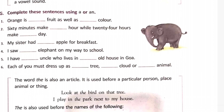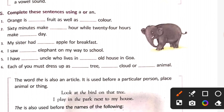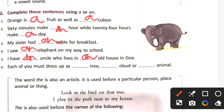Examples of A and AN: An orange is a fruit as well as a color. 60 minutes make an hour and 24 hours make a day. My sister had an apple at breakfast. I saw an elephant on my way to school. I have an uncle who lives in an old house in Goa. Each one of you must dress up as a tree, a cloud, or an animal.